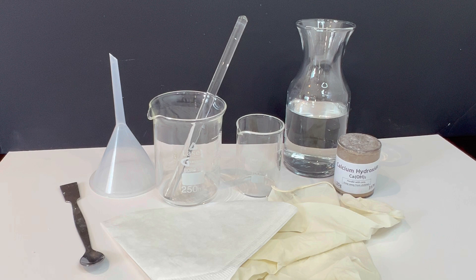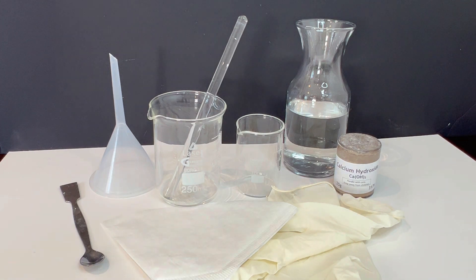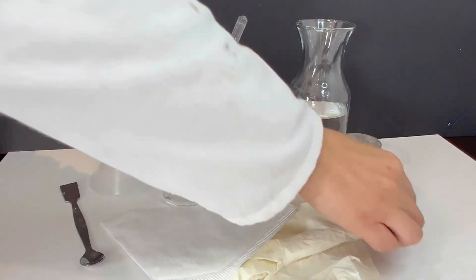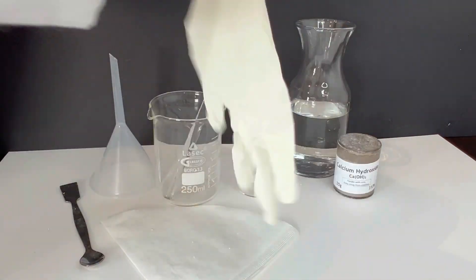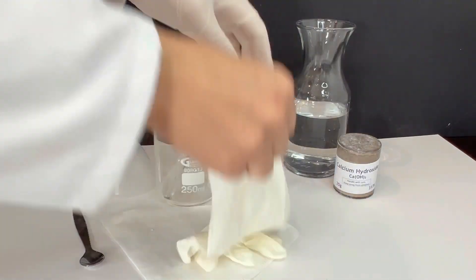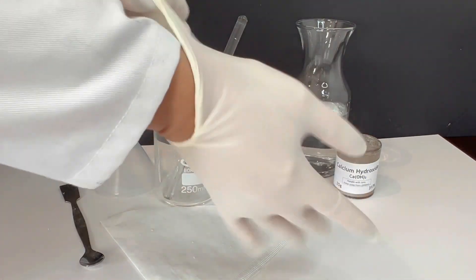If you are wearing glasses, you don't need safety goggles. Before we begin, remember calcium hydroxide is a corrosive base. Always wear your safety goggles and gloves and work in a well-ventilated area or under a fume hood.